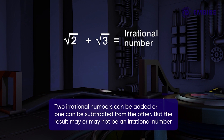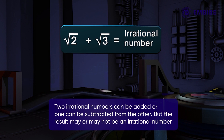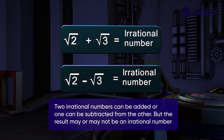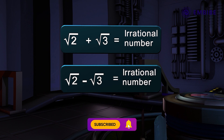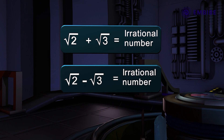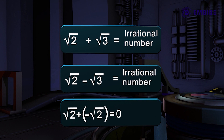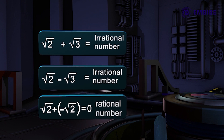Two irrational numbers can be added, or one can be subtracted from the other, but the result may or may not be an irrational number. For example, it can be proved that √2 + √3 is an irrational number, but √2 + (−√2) = 0, which is a rational number.